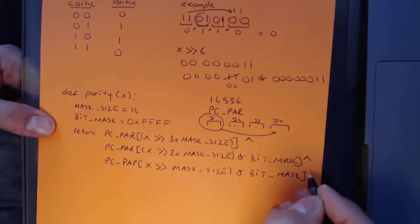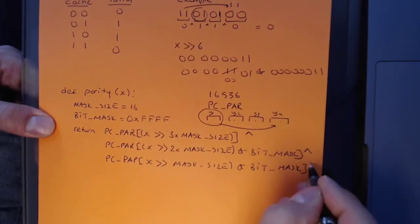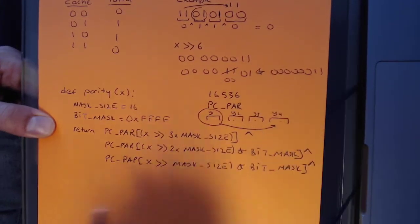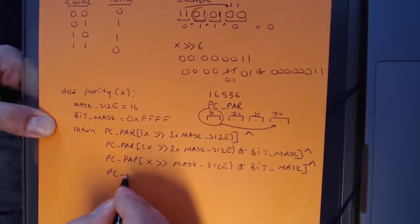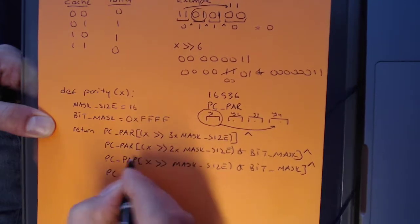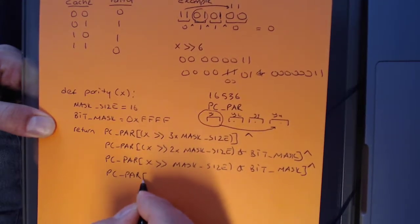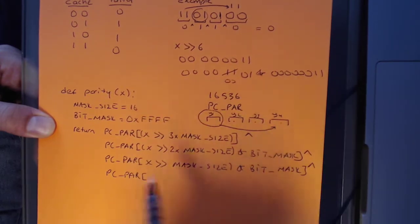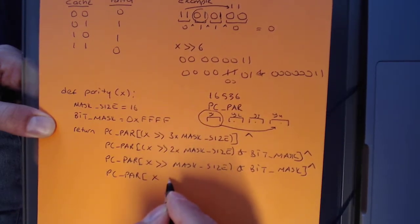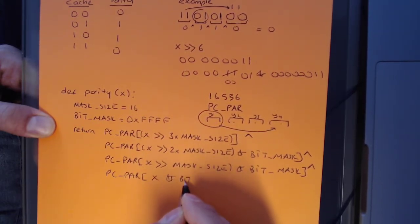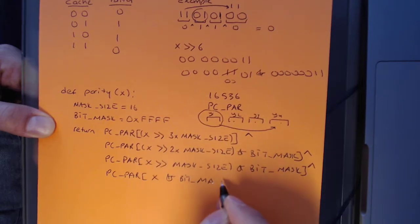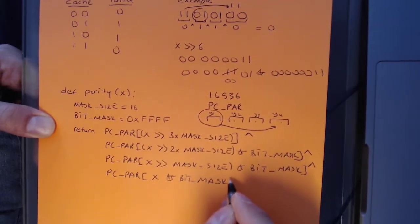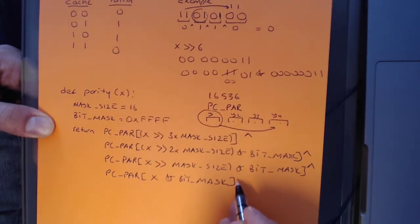So far so good. And I'm going to XOR it with the last thing, which is pre-computed parity lookup. In this case, it's already the least significant 16 bits. I take X, and I don't need to shift anything. I AND it with my bitmask. And I return this.